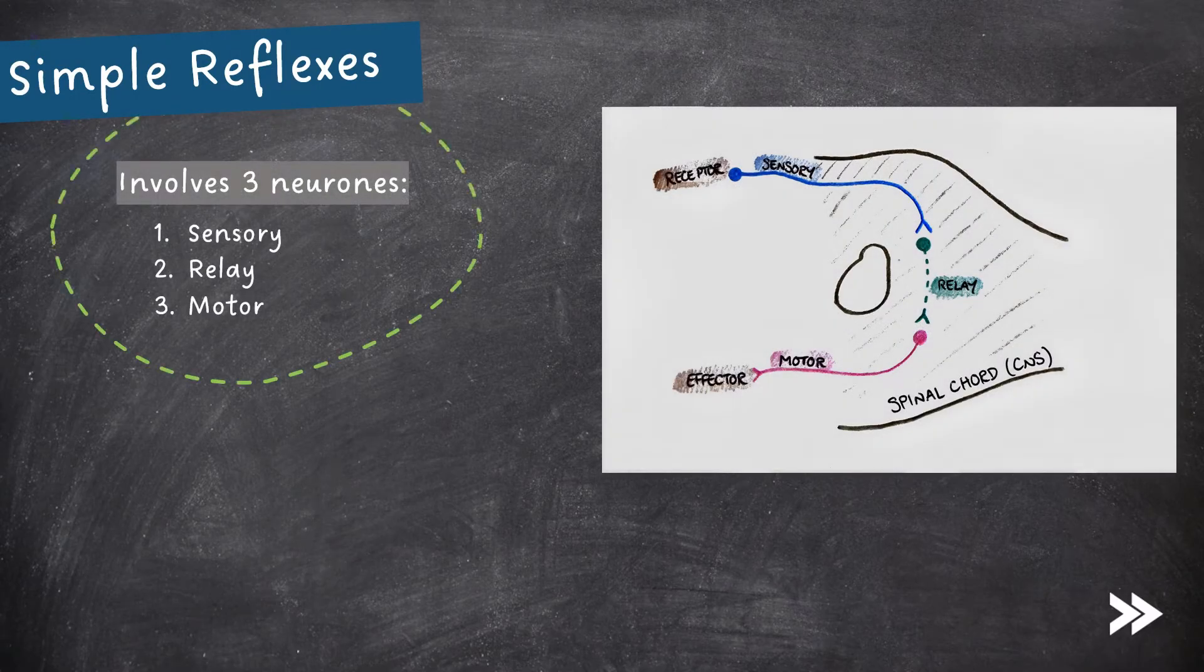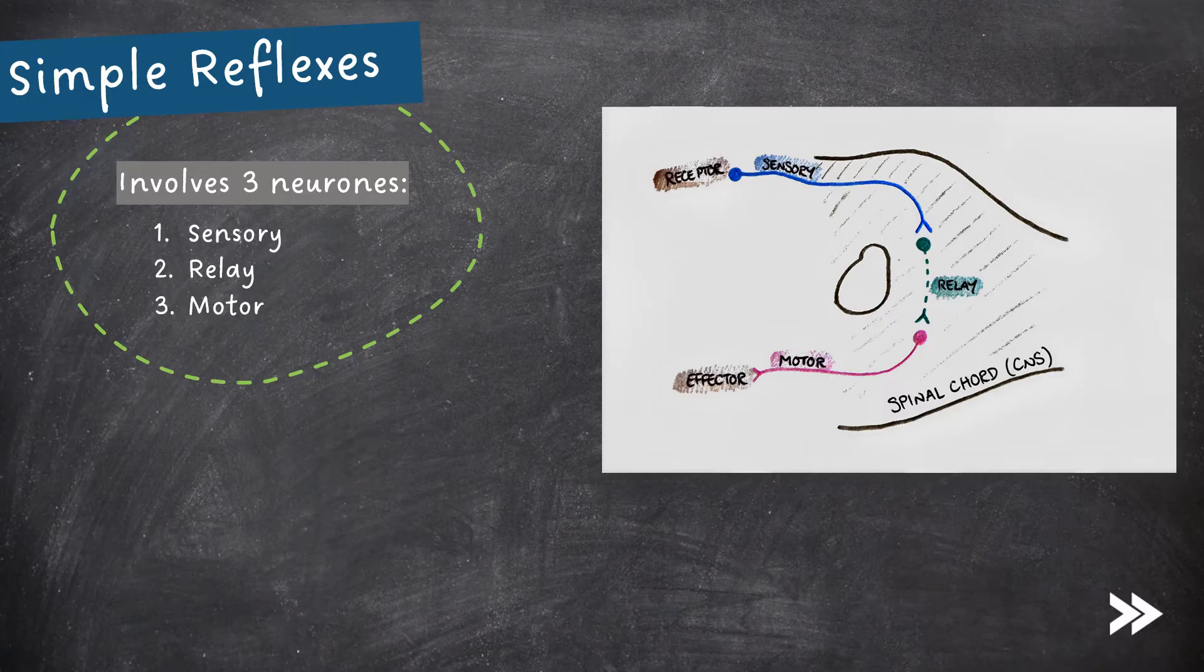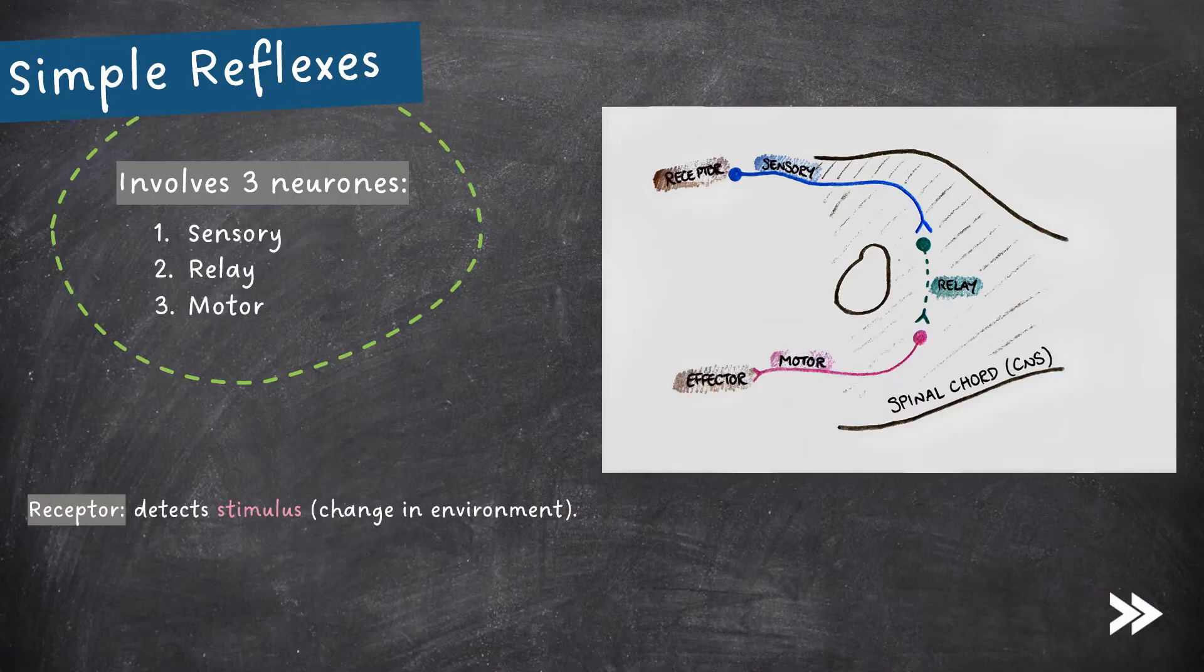Finally, we have simple reflexes, which involve three neurons: sensory, relay, and motor neurons. First, a receptor detects the stimulus, which, remember, is a change in either the internal or the external environment.